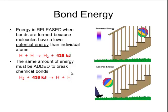That same amount of energy must be added in order to break those chemical bonds. Going back to the staircase analogy, if the ball is at the bottom and I want to kick it up to the top, I would have to apply a certain amount of energy to raise it to a higher potential energy level. The same is true for molecules — if I have a hydrogen molecule with a low amount of potential energy and I want to break it apart into individual hydrogen atoms, I would have to apply that same amount of bond energy to break it. So breaking bonds requires energy to be added, whereas forming chemical bonds releases energy.